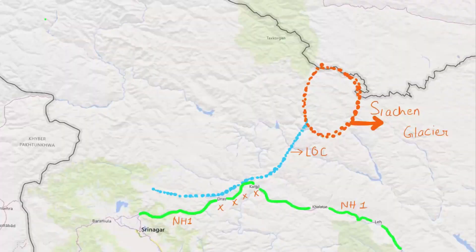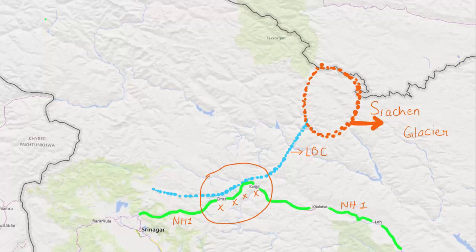The biggest question is why the Kargil region was specifically targeted. If you look at the map, the blue line marks the LOC, and the green line shows NH1 — National Highway 1 — which runs from Srinagar. This highway provides supply to the Siachen Glacier region, and other countries also supply through this route. So the Pakistanis had a plan focused on this region, which is why Kargil was chosen.